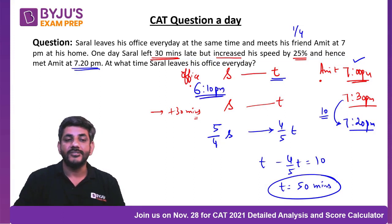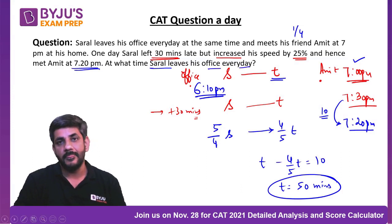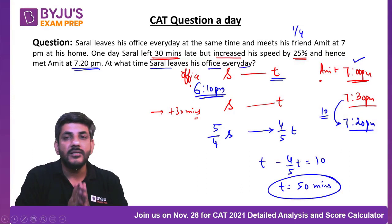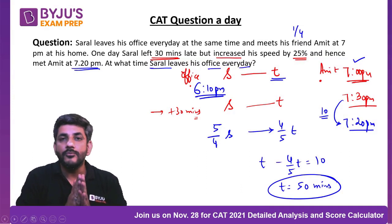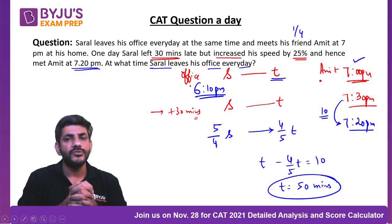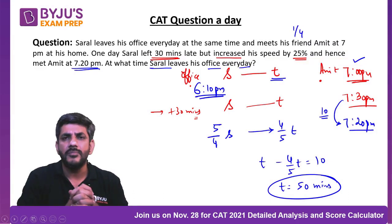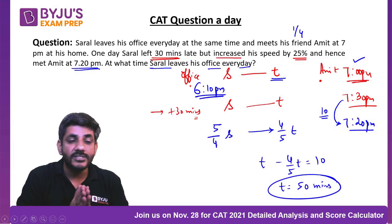He every day reaches Amit's home at 7 PM by taking 50 minutes, which means he leaves office at 6:10 PM. This is a simple question based on proportionality. Almost every year CAT asks questions based on proportionality in TSD — be very comfortable with this topic. That was the question of the day. Thank you very much!